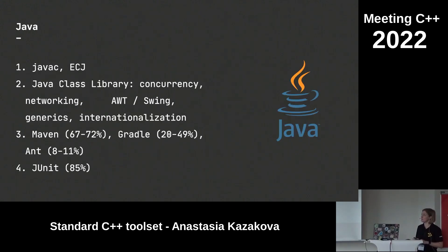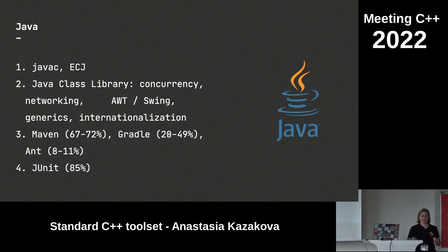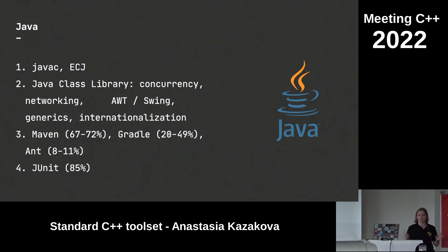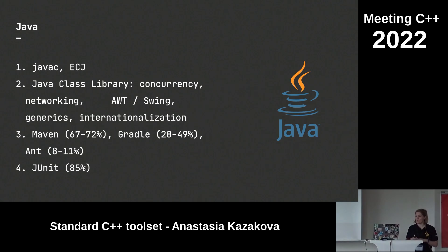Let's briefly see how other languages are doing. Java has essentially one compiler — javac. Whether you take it from Oracle's official runtime or the JDK, the compiler is the same. There are a few more compilers for Java, but they're not that popular. The most popular alternative is probably the Eclipse Compiler for Java, which was specifically created for IDE needs — it can run code that has blocks which don't compile, and it can do incremental builds.